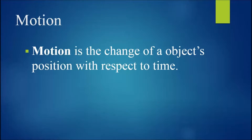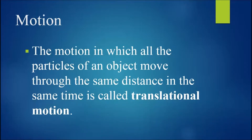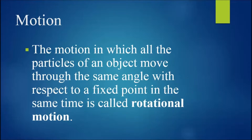Now we will begin to consider the motion of an object. Motion is the change of an object's position with respect to time. In general, there are two basic types of motion: translational motion and rotational motion. Translational motion is the motion in which all the particles of an object move the same distance in the same time, while rotational motion is the motion in which all the particles of an object move through the same angle with respect to a fixed point in the same time.